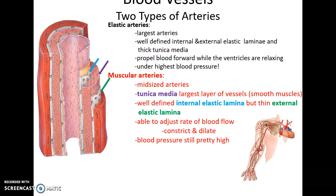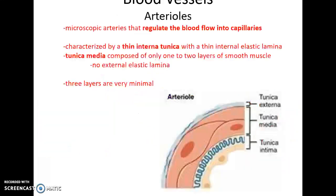Muscular arteries are the mid-sized arteries. They have a very large tunica media layer with a lot of smooth muscle tissue for their size, a well-defined internal elastic lamina, but a thin external elastic lamina. They can adjust the flow rate of blood by constricting or dilating their smooth muscle tissue, and blood pressure here is still pretty high.